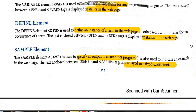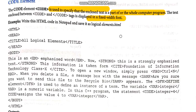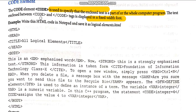The code element is used to specify that the enclosed text within the tags code and backslash code is part or the whole of a computer program. Any computer program logic that you are writing is placed within the code tags. It is also displayed in a fixed-width font, similar to the samp element for output. The code element is used when you are coding or writing the computer program itself.